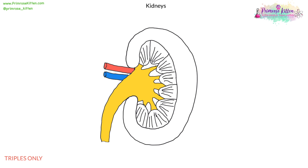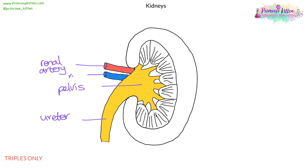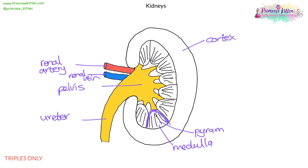The basic structure of the kidney: you've got the ureter, this area is called the pelvis, the renal artery, and the renal vein. On the outside of the kidney you've got the cortex; on the inside you've got the medulla. The structure inside is called a pyramid. Inside the cortex and medulla you've got something called nephrons.